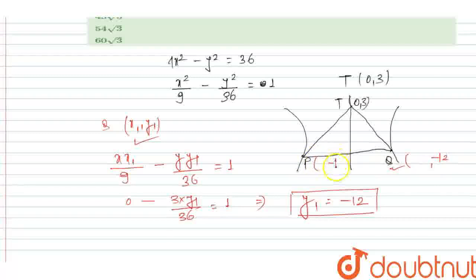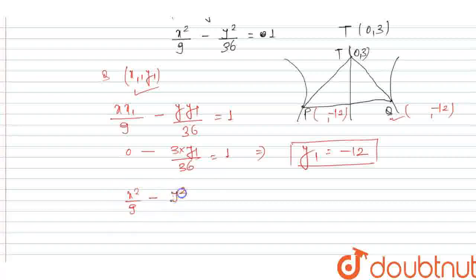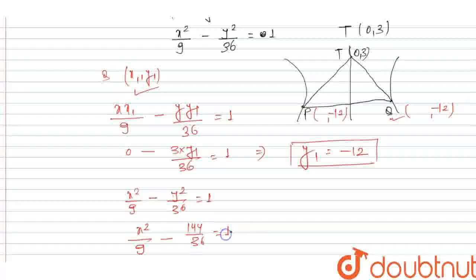The y-coordinate of P is also -12. We now need to find the x-coordinates. Since points P and Q also lie on the hyperbola, they must satisfy its equation. Substituting y = -12 into x²/9 - y²/36 = 1, we get x²/9 - (-12)²/36 = 1, which gives x²/9 - 144/36 = 1.